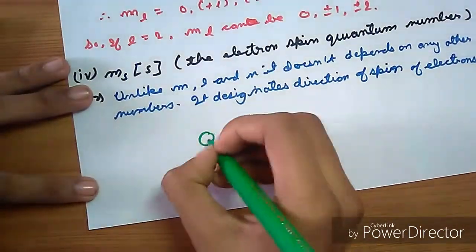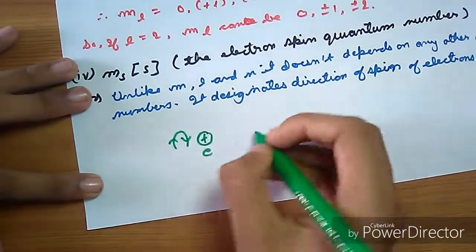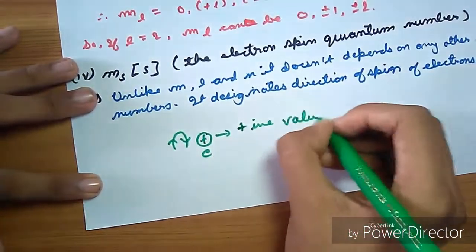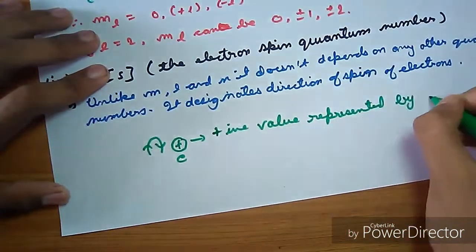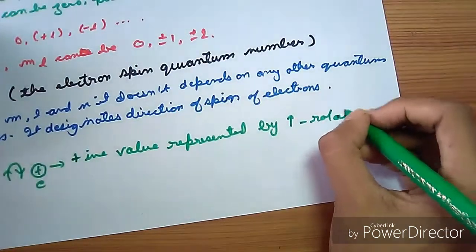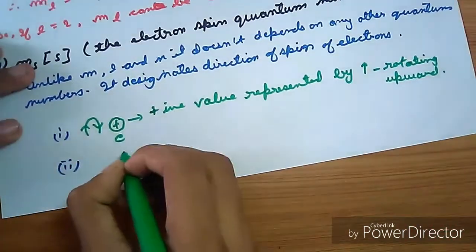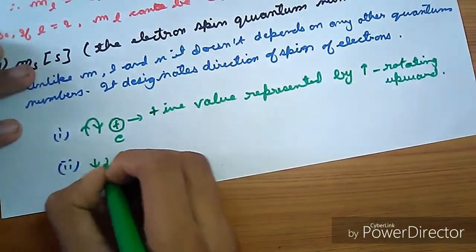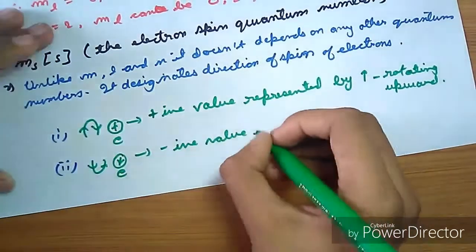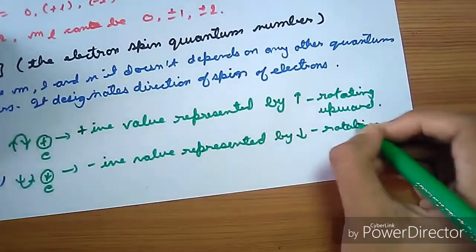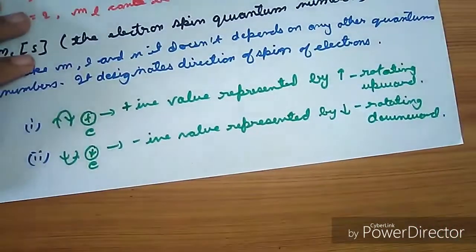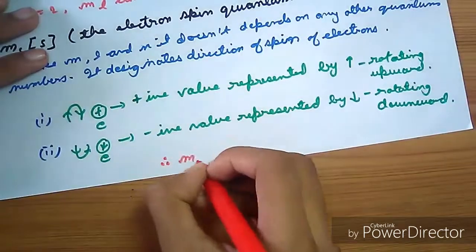An electron with spin upwards is represented by positive value or upward arrow, rotating upward. Second is electron rotating downwards, represented by negative value and downward arrow. Its value is negative or positive half.